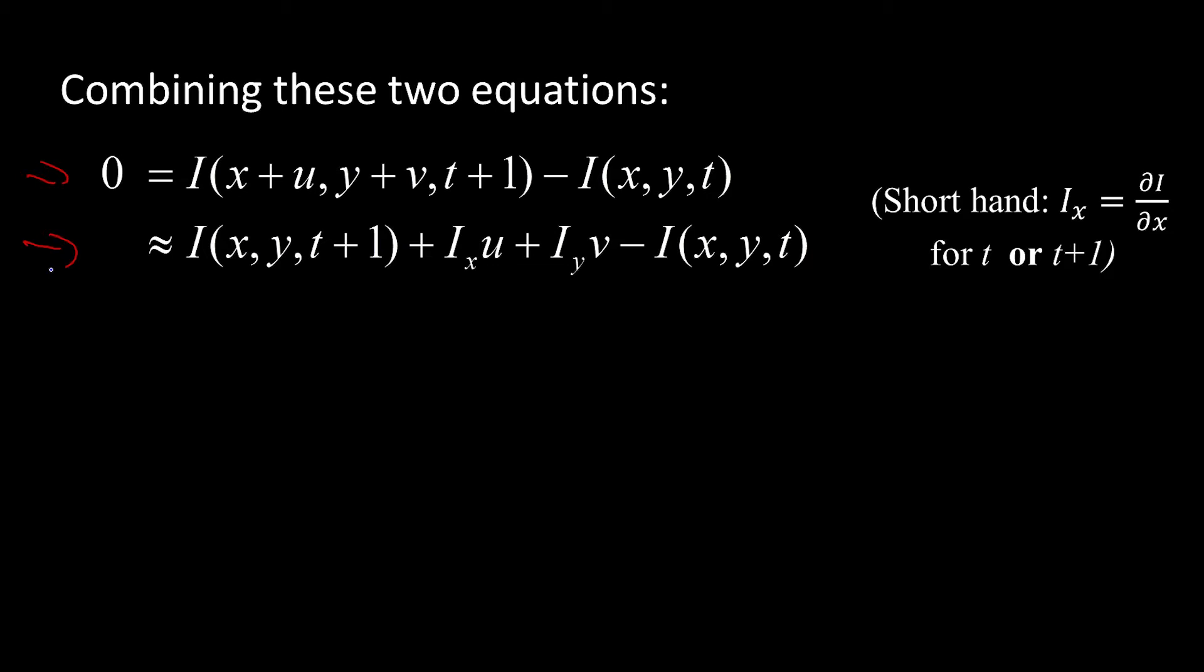after I substitute in the Taylor series expansion, there's a little sleight of hand going on. What I'm doing is I'm substituting for this value. Remember it says that I can get the location at x plus u, y plus v, all right? I can do the Taylor expansion. So here's the original x, y at t plus 1,